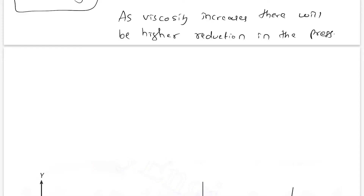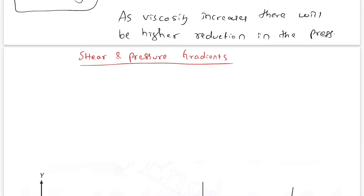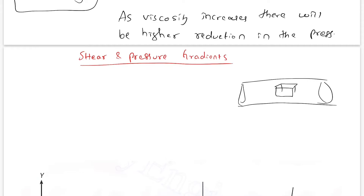Welcome back. The next topic in our unit is shear and pressure gradients. We'll be seeing the relation between shear and pressure gradients. A shear gradient is the change of shear stress in a particular direction. Similarly, the change in pressure in a particular direction is called a pressure gradient. Consider a pipe and a small 3D element — we'll study the behavior of this element and derive the relation between these two gradients.